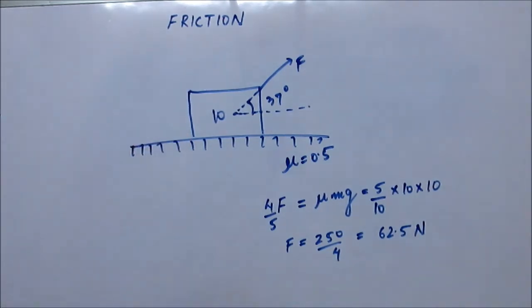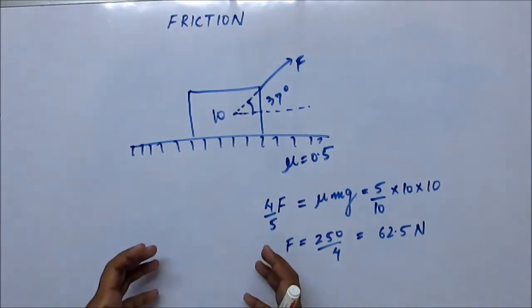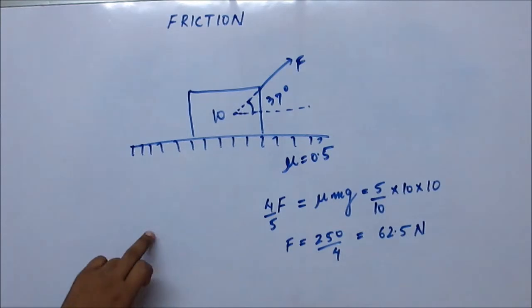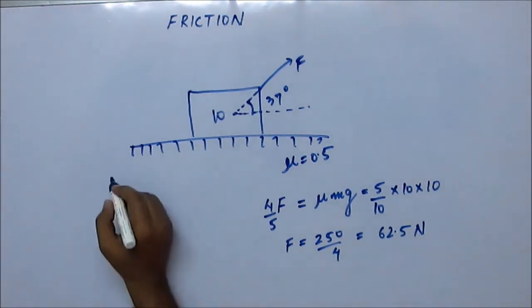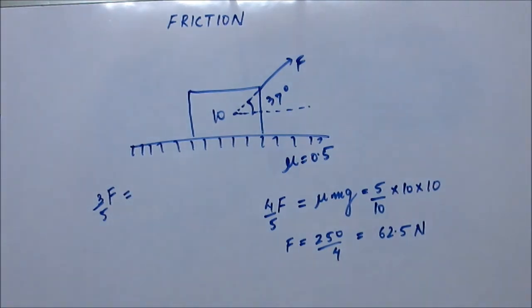Normal reaction is there because the block is pressing the ground. When it is at the verge of being lifted up, then it will stop pressing the ground and normal reaction will vanish at that point. So when it is at the verge of being lifted, then f sin 37 degrees, which is 3/5, this should be equal to mg.